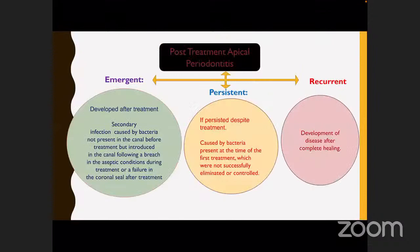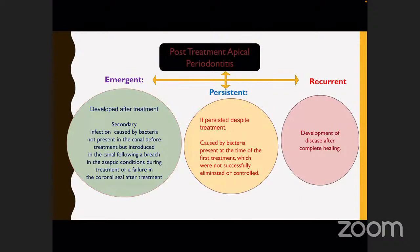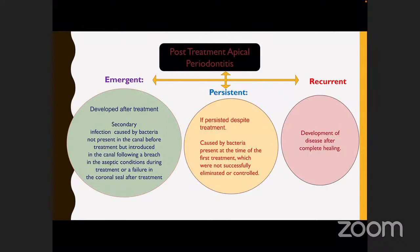Post-treatment disease can be classified into emergent, persistent, and recurrent. Emergent occurs when bacteria not present before treatment are introduced through a breach in aseptic conditions — improper sterilization of instruments. Persistent refers to pain that persists despite treatment, caused by bacteria already present before treatment. Recurrent is when, after complete healing, disease develops again — called recurrent post-treatment apical periodontitis.